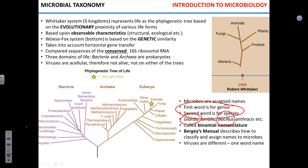There's a manual called Bergey's Manual that describes how to classify microbes — it's a huge compendium. There's a saying among microbiologists that there is a special place in hell for taxonomists, because bacterial names change. Bacteria get reassigned — based on recent analysis, a microbe may end up with a different name and belong to a different class.